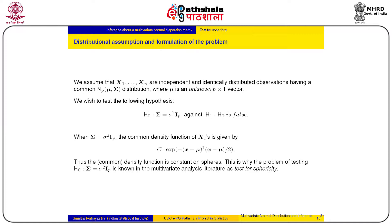We have talked about a very similar, somewhat more general test: testing sigma equals sigma squared times sigma naught, where sigma naught is a specified p cross p positive definite matrix. In this case, we are choosing sigma naught to be the identity matrix of order p. So basically, if we mechanically plug in the expressions obtained in the case of testing sigma equal to small sigma squared times capital sigma naught, we should immediately get the results, though we can independently state the relevant quantities.